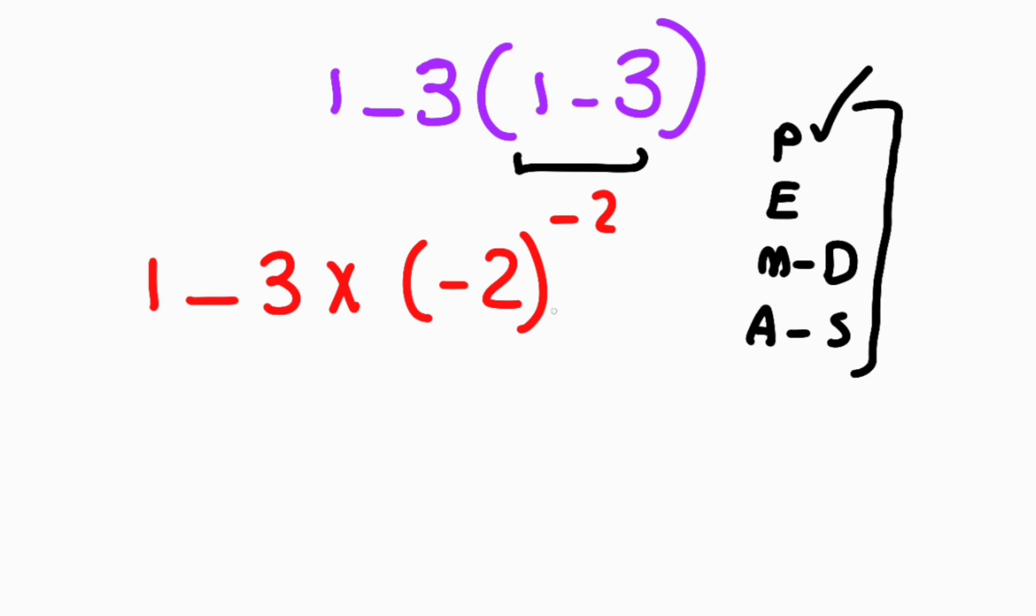Now, we have one multiplication and one subtraction. And according to the PEMDAS, we know that multiplication has higher priority than this subtraction. Now, 3 times negative 2 equals negative 6.